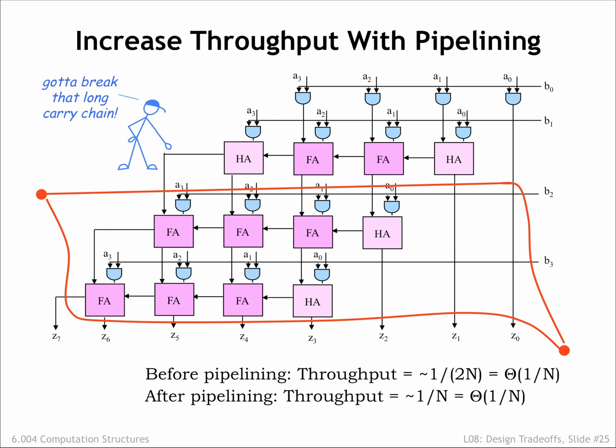The necessary insight is that as long as an entire row is inside a single pipeline stage, the latency of the stage will be order N since we have to leave time for the N-bit ripple carry add to complete.